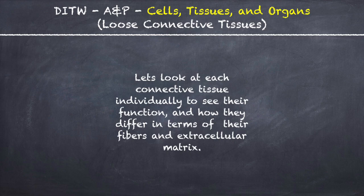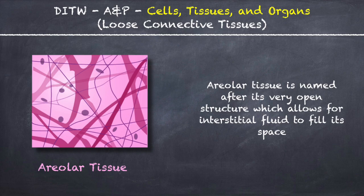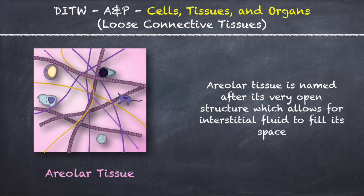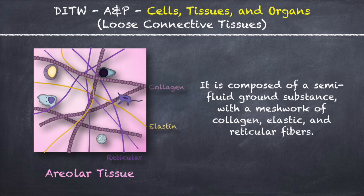Let's look at each connective tissue individually to see their function and how they differ in terms of their fibers and extracellular matrix. Areolar tissue is named after its very open structure which allows for interstitial fluid to fill its space. It is composed of a semi-fluid ground substance with a meshwork of collagen, elastic, and reticular fibers.